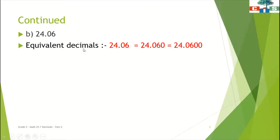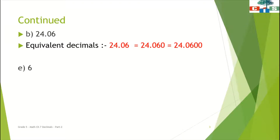The equivalent decimals for 24.06 are 24.060 — this is the first equivalent decimal — and 24.0600 — this is the second equivalent decimal for 24.06. Now scholars, C and D number sums you have to do by yourself. It is very easy. You have to follow the same method.